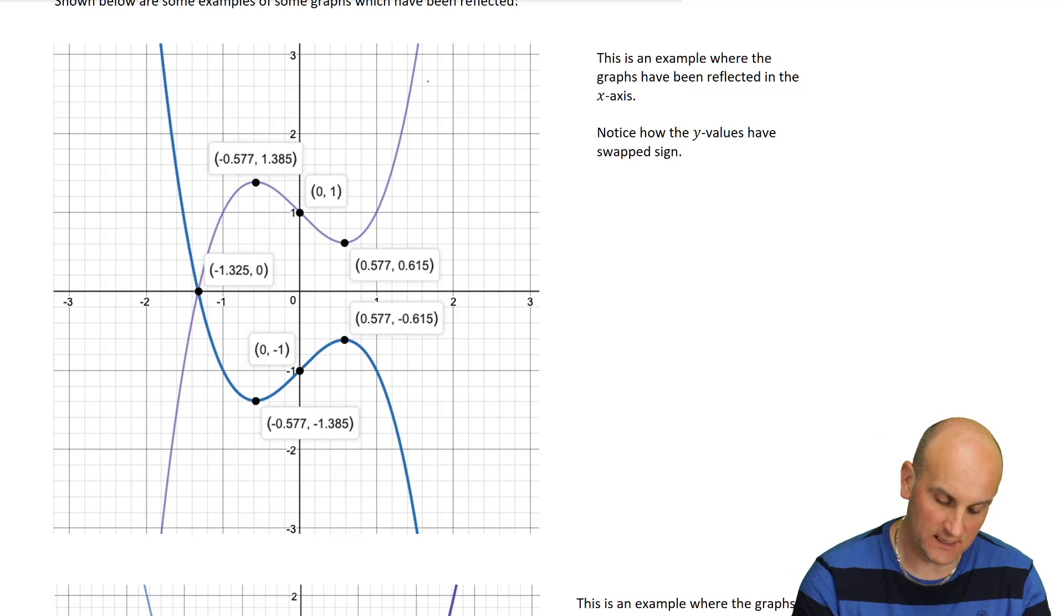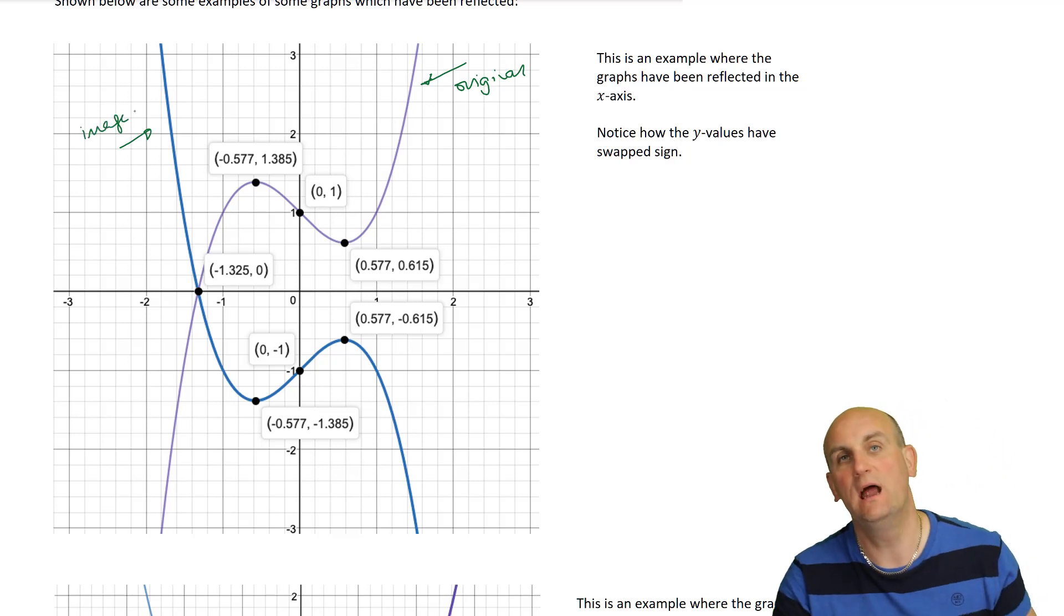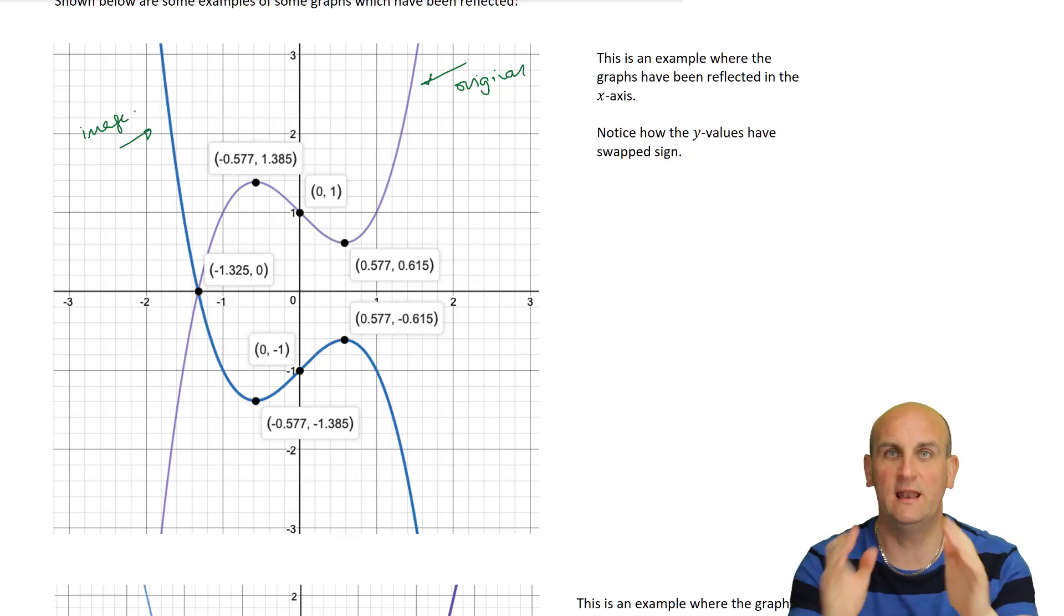So looking at the graph below, this is an example where the graphs have been reflected in the x-axis. So as I say, you can only reflect in two ways. When I look at my two graphs, it doesn't really matter which was the original, but I am going to tell you that this was the original and this was the image. And what we notice is that actually when we are reflecting in the x-axis, what values change? It's the y values.